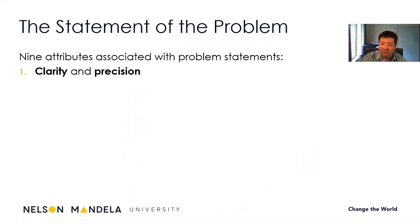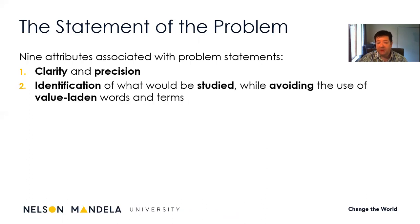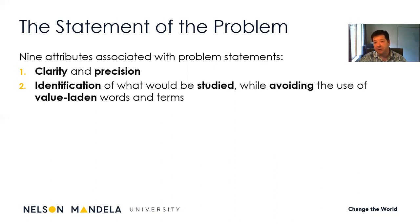So let's talk about the statement of the problem. This problem statement normally has nine attributes: clarity and precision. As I said, every word is very important. The identification of what would be studied while avoiding value-laden words and terms — use words that are commonly used. You'll also notice that different continents use different kinds of words, so use the terminology used here in South Africa or Africa rather than what they use in America or Europe.